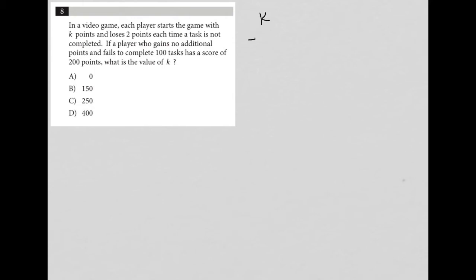This question says: in a video game, each player starts the game with K points and loses two points each time a task is not completed. So we have K and minus two each time a task is not completed. I'm going to call that 2X, where X represents incomplete tasks.